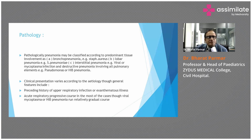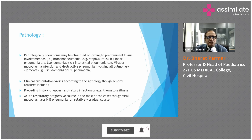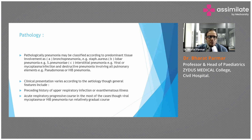What is the pathology of pneumonia? Pathologically, pneumonia may be classified according to the predominant tissue involvement. There is bronchopneumonia with Staphylococcus aureus and lobar pneumonia. There is Streptococcus pneumonia and interstitial pneumonia. There is viral or mycoplasma infection and destructive pneumonia involving all pulmonary elements. There is Pseudomonas or Haemophilus pneumonia.